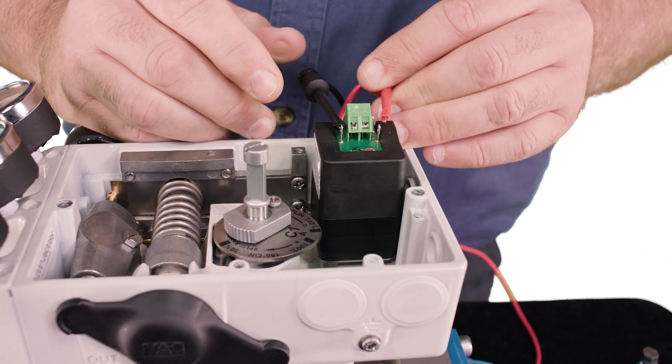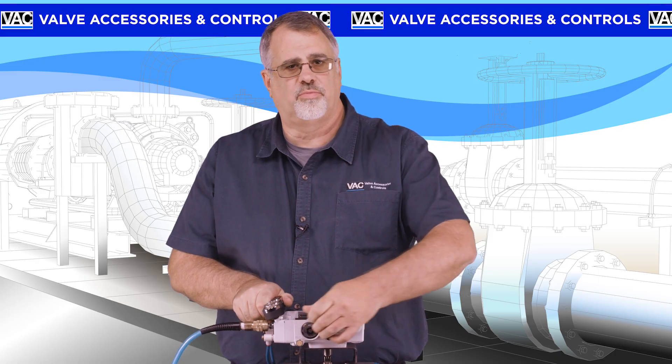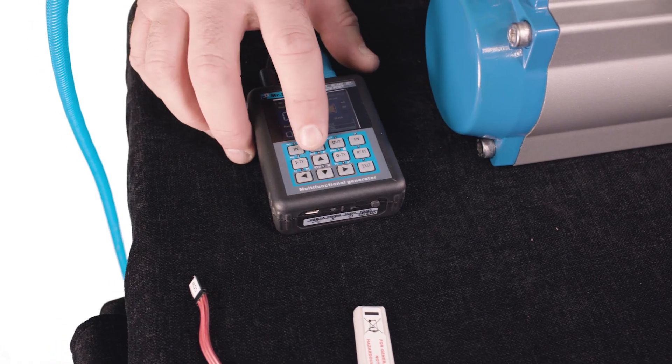The I2P has convenient tabs to clip the leads from your loop calibrator to. Open the rubber cover on the calibration port and apply a 4 milliamp signal to the positioner.